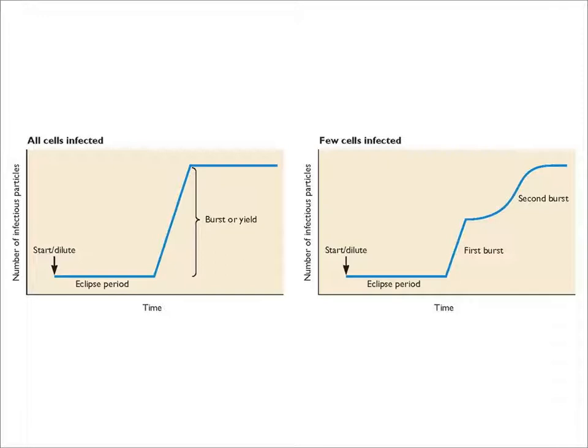If all cells are infected, you get a synchronous one-cycle infection — one eclipse, one burst. If you dilute the virus and infect fewer cells, you get a multi-cycle infection: a first burst, another eclipse period, and a second burst, because the first infected cells produce virus that then infects the remaining cells. To summarize: infecting all cells gives one-cycle infection; infecting fewer cells gives multi-cycle infection.